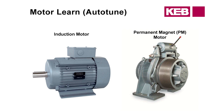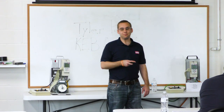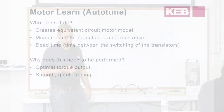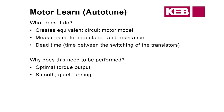For permanent magnet machines, the motor learn is required. If you don't do it, the motor will not turn at all. The data measured during the auto-tune will be used for the encoder learn, so we need to do a motor learn with the correct motor data to have the correct encoder position. What it measures is the motor inductance and resistance, and what it does with that is create an equivalent circuit model internal to the drive, which gets fed into the feedback loop during closed loop operation.